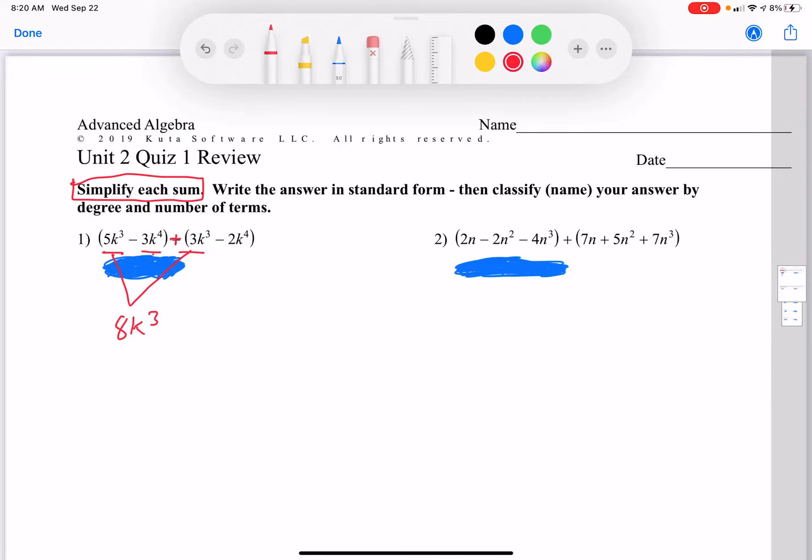Negative 3k to the 4th power minus 2k to the 4th power, so that's just negative 3 plus negative 2, which is negative 5k to the 4th power. Don't change the exponents. Exponents only change when you're multiplying, not when you're adding.